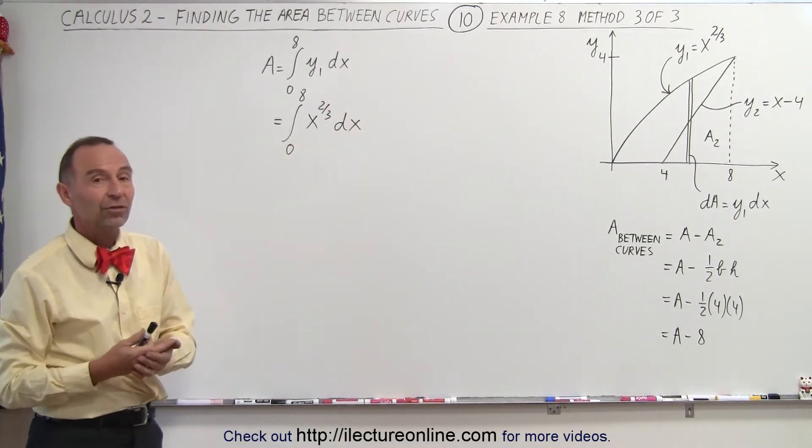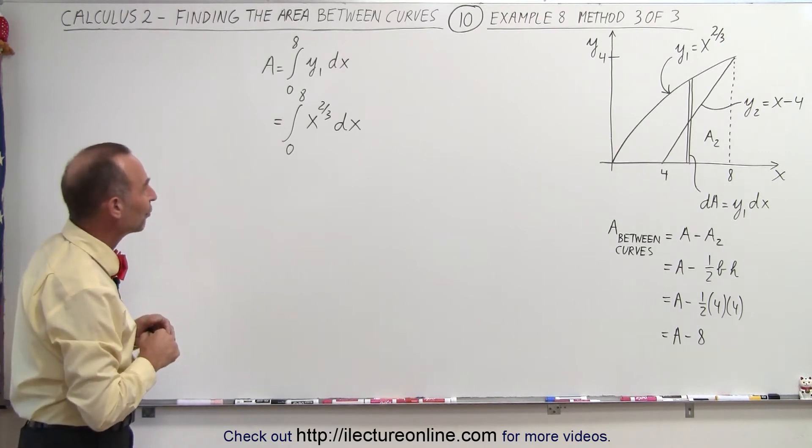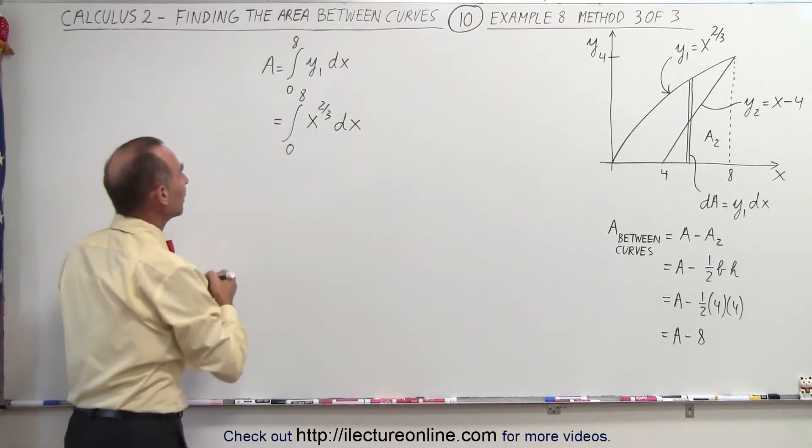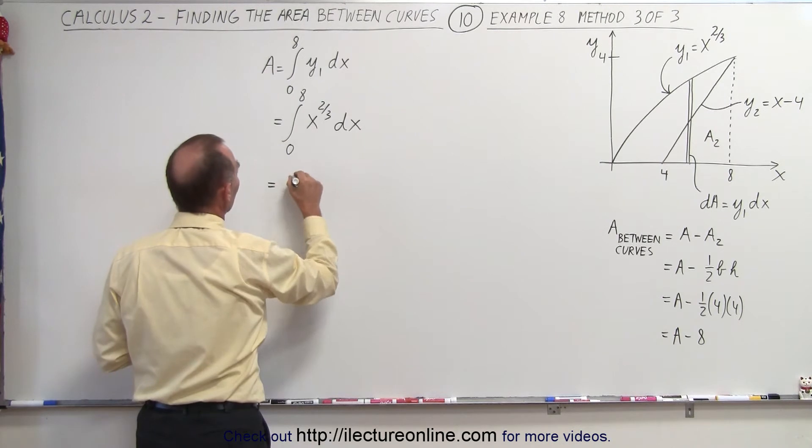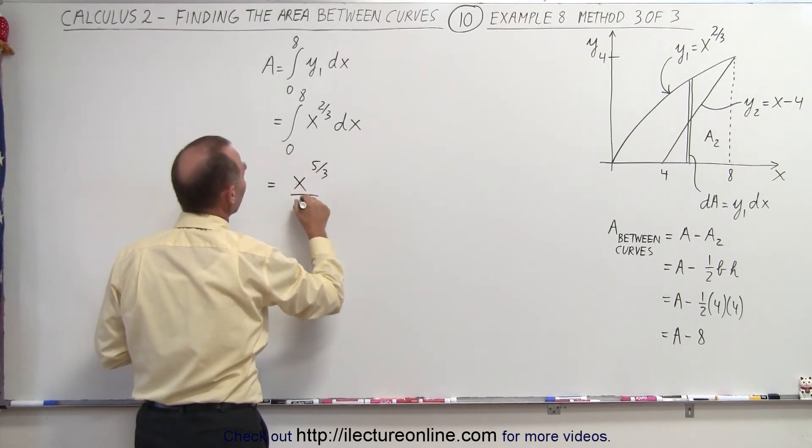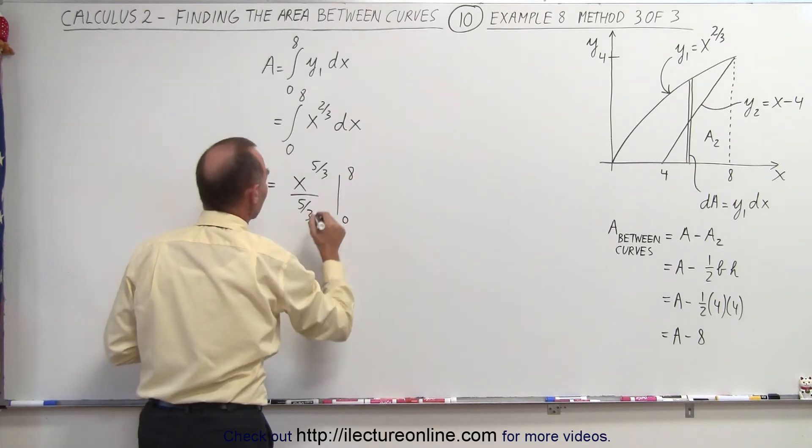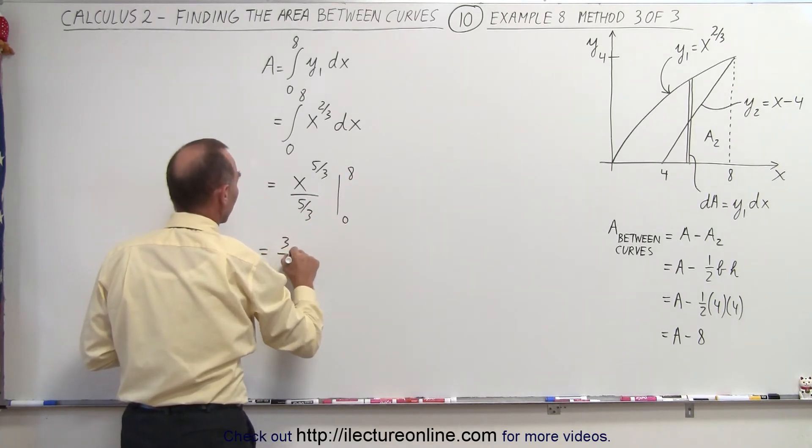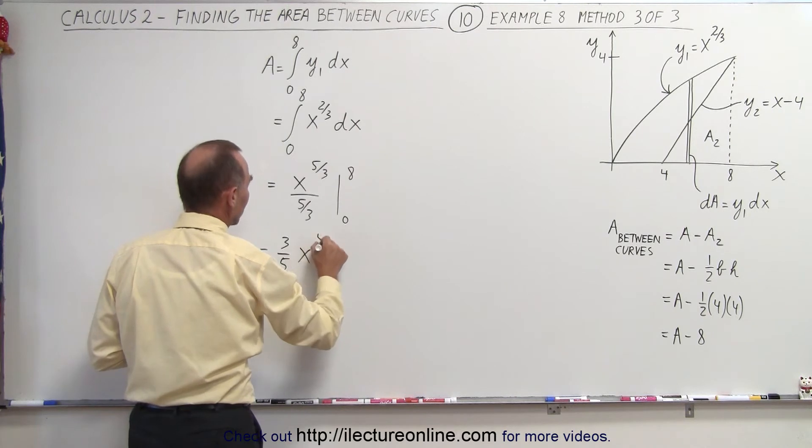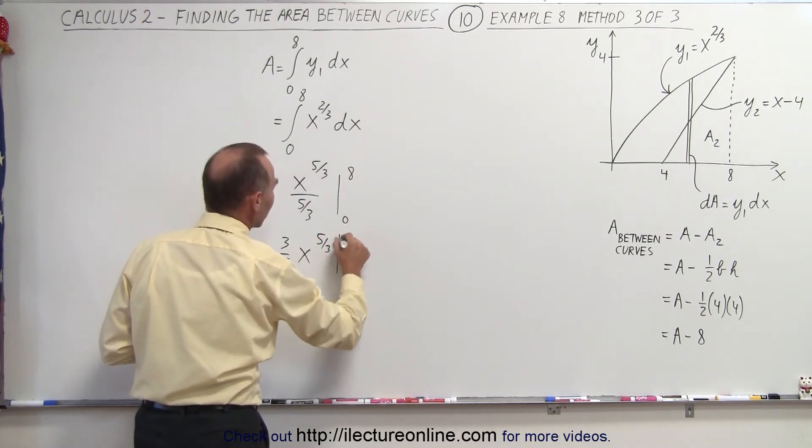Let's see if this also gives us the same result that we got in the previous two videos. So when we integrate this, we get the following: this is equal to x to the five-thirds divided by five-thirds, evaluated from zero to eight. Simplifying that, this is equal to three-fifths x to the five-thirds evaluated from zero to eight.